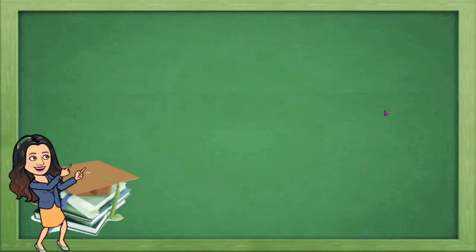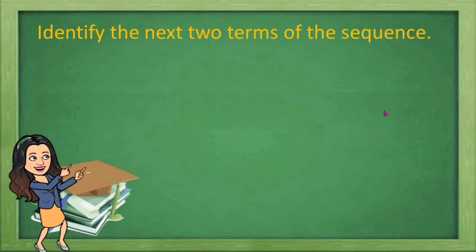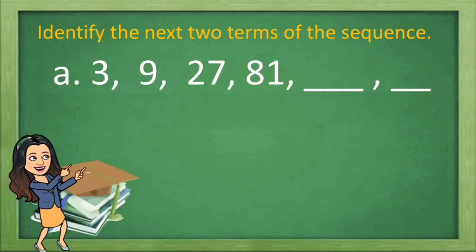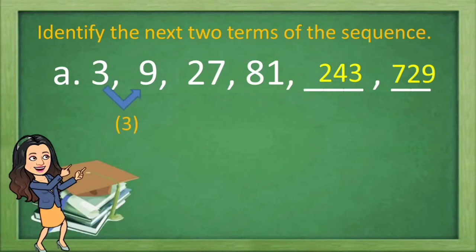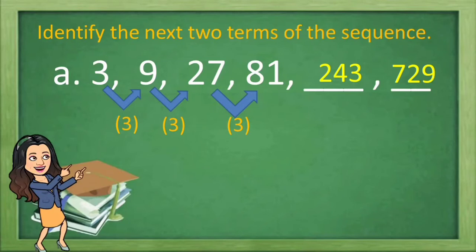Let us have an activity. Let us identify the next two terms of the given sequence. Letter A: 3, 9, 27, 81, blank, blank. The next two terms are 243 and 729. Because if you multiply the first term by 3, you will arrive on the second term, 9. Multiplying the second term by 3, you will have 27. And multiplying 27 by 3, you will arrive on 81. Therefore, to get the next term, you multiply 81 by 3 to get 243. Then 243 times 3, you will have 729.